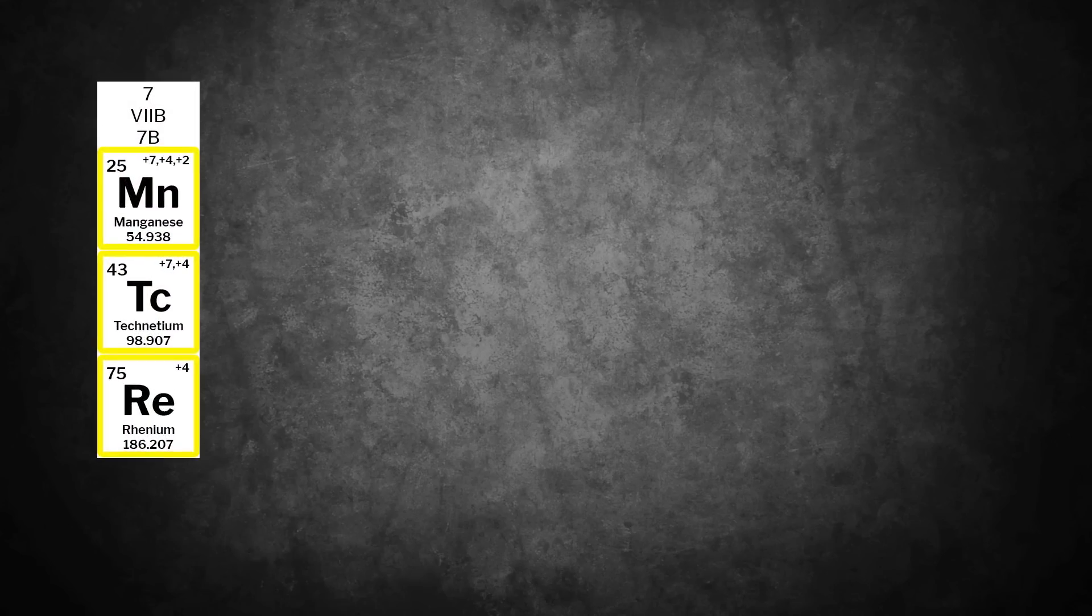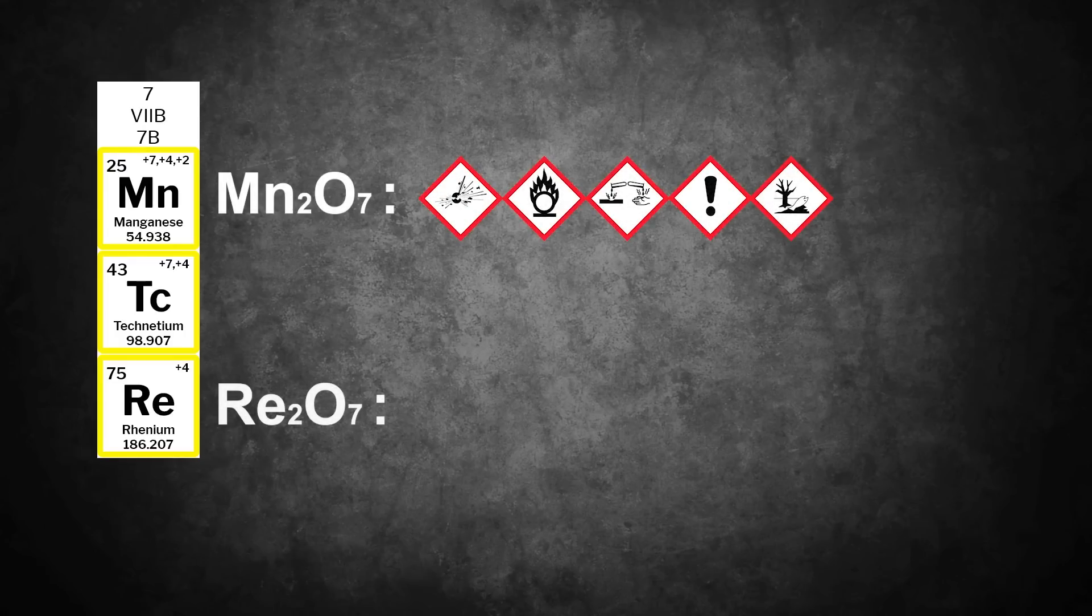Unlike its group neighbor manganese 7 oxide, rhenium 7 oxide is not a strong oxidizer. One of the few matters that are oxidized is bromine from hydrobromic acid.